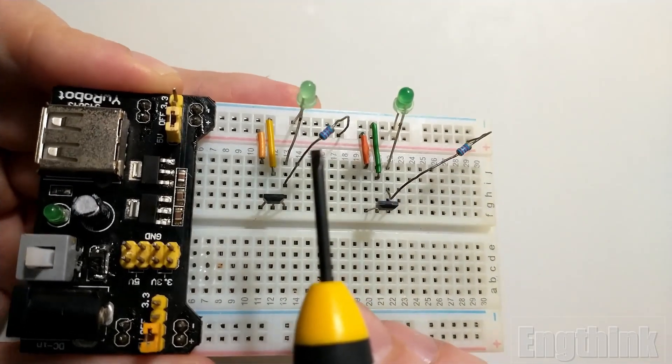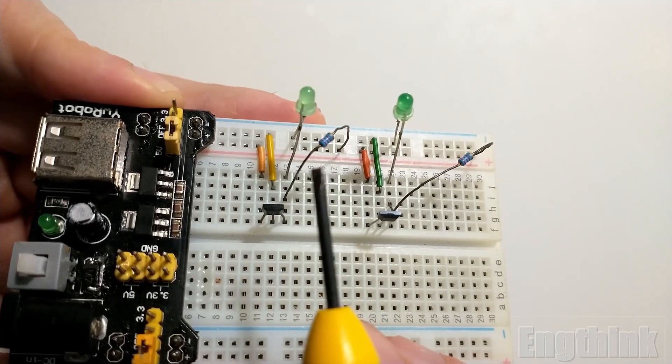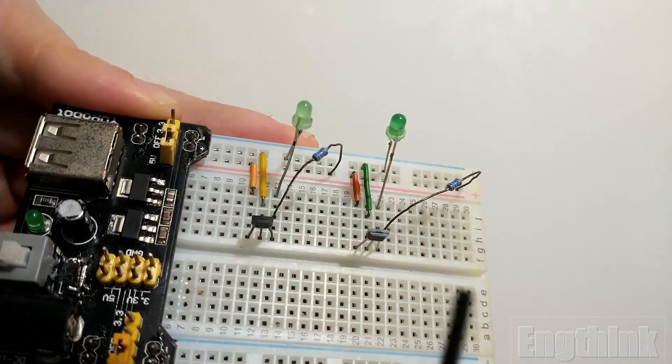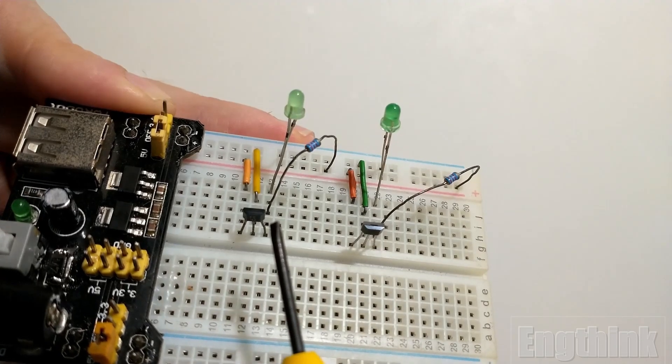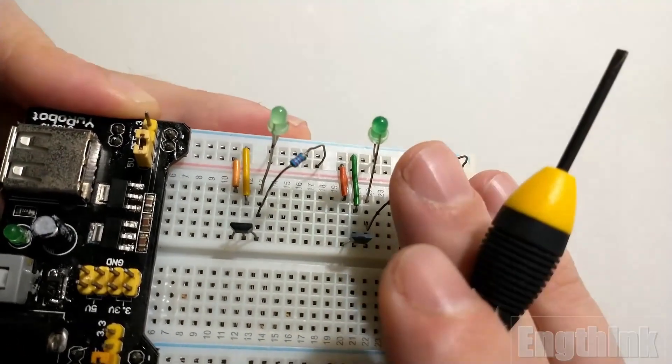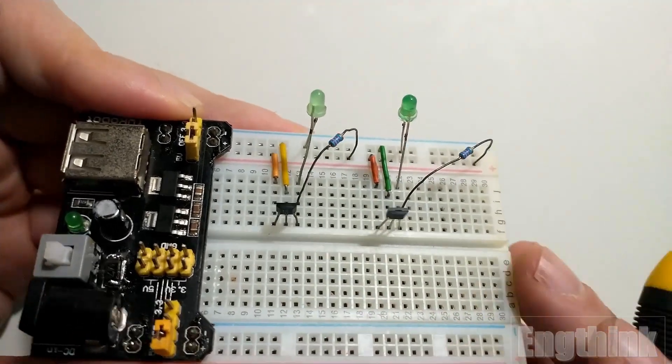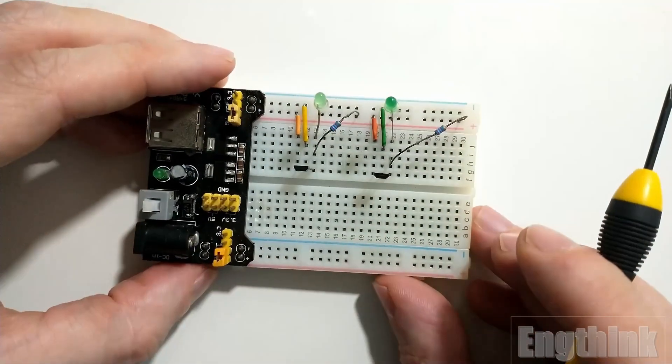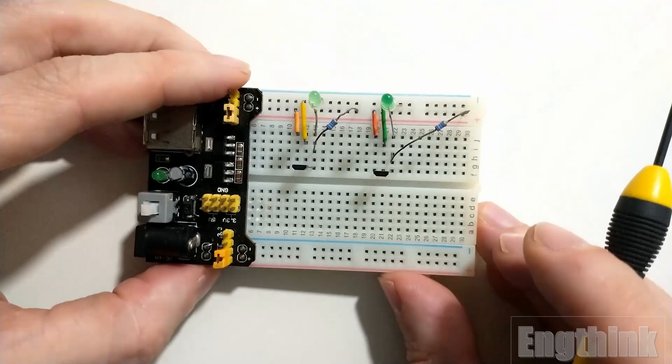To be possible to see what happens with the output of both Hall effect sensors, I'm also connecting LEDs with resistors to show the behavior of the output.